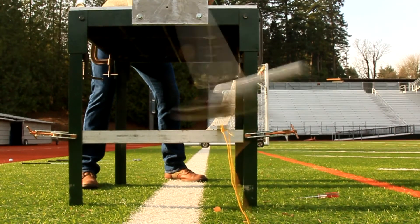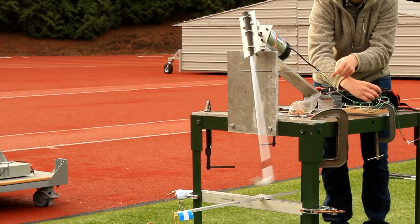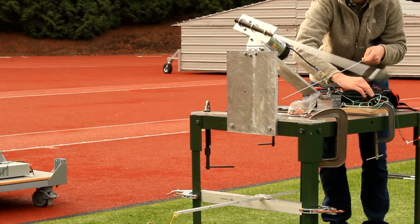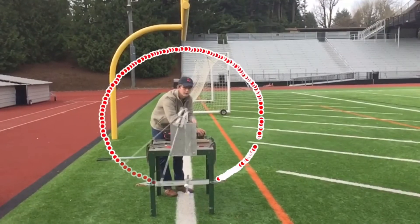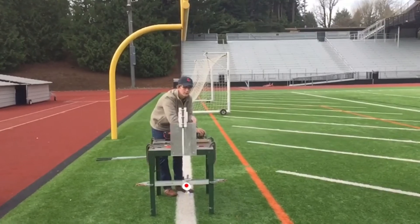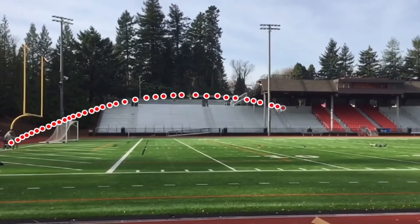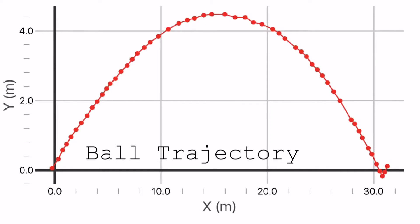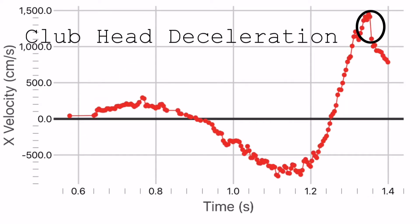To test our robot we analyzed the hitting distance of a driver versus a 7-iron. Using the Vernier motion tracking application we were able to analyze the swing of the golf club, ball contact, and the flight path. This software also allowed us to calculate a predicted flight and distance to compare to the data we collected. In addition we were able to analyze the deceleration of the club through impact.